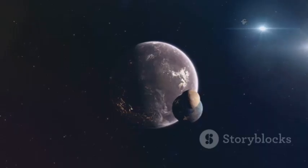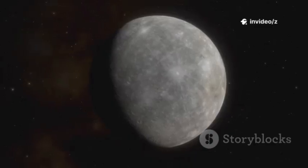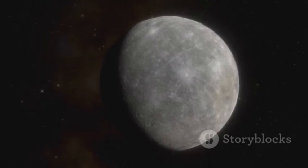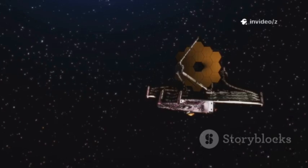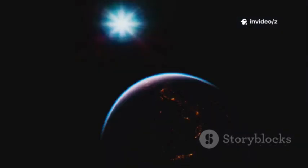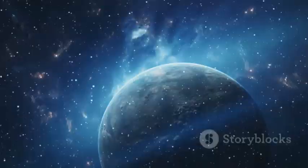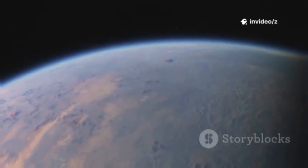The TRAPPIST-1 system, with its seven rocky planets, is a prime target. Early results hint that some may lack thick atmospheres, but the search for life-friendly conditions is just beginning. Webb is turning exoplanet science from guesswork into real comparison. We're building a catalog of alien worlds, each with its own story. Studying these planets helps us understand Earth's uniqueness and its fragility. Webb is revealing that planets are complex, dynamic worlds, not just distant points of light.